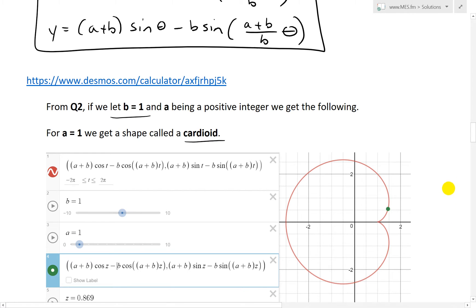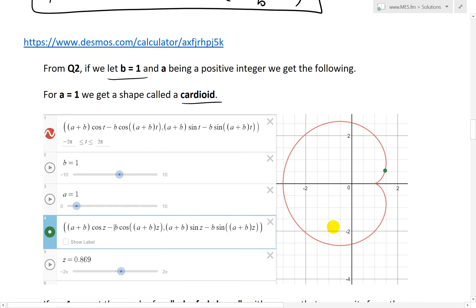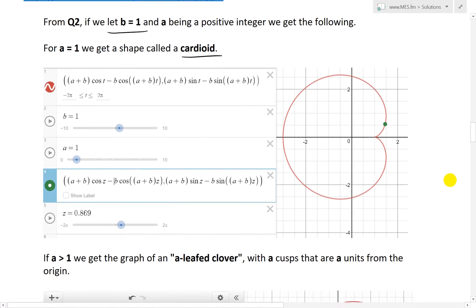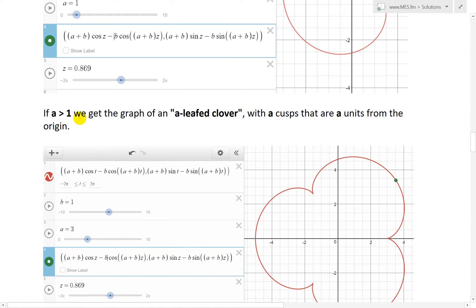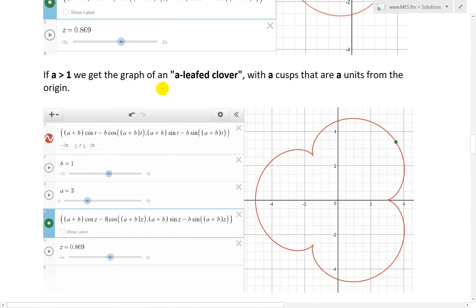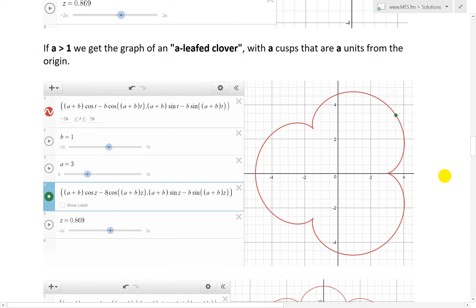So when a equals to 5 you have distance here is 5. So what I've done I copied and pasted there. So b equals to 1, a equals to 1 we have this cardioid, that's just a popular shape. And now if we get a is greater than 1, it's still an integer, we get an a-leafed clover, a flower, with a cusps. So in this case a is 3. So we have 1, 2, 3 and there's these leaves right here. There's 3 of those that are a units from the origin. So here this is 3, so this radius here is 3, which is a.